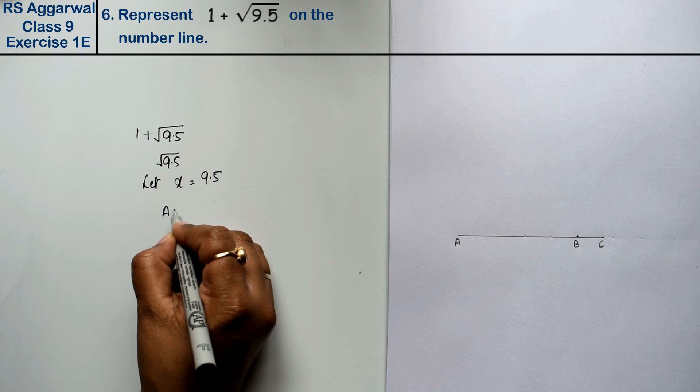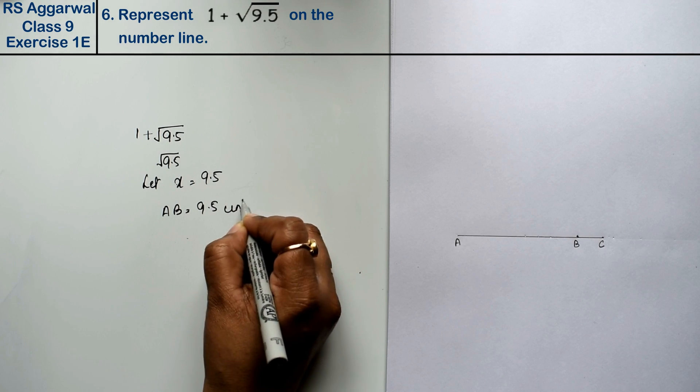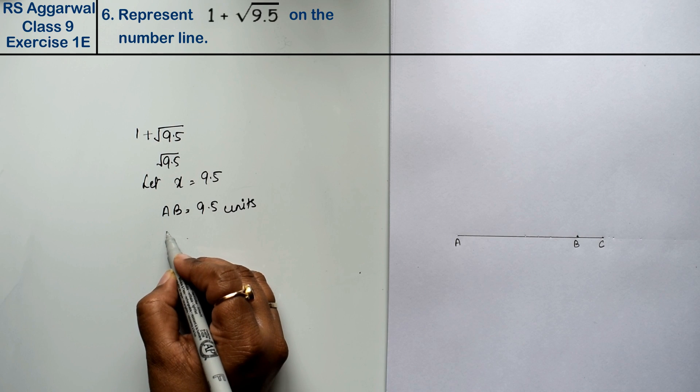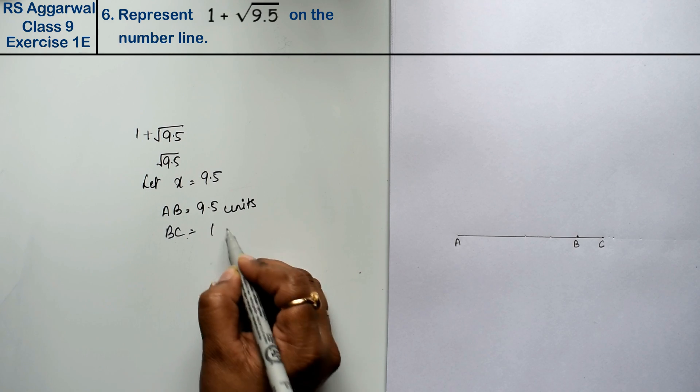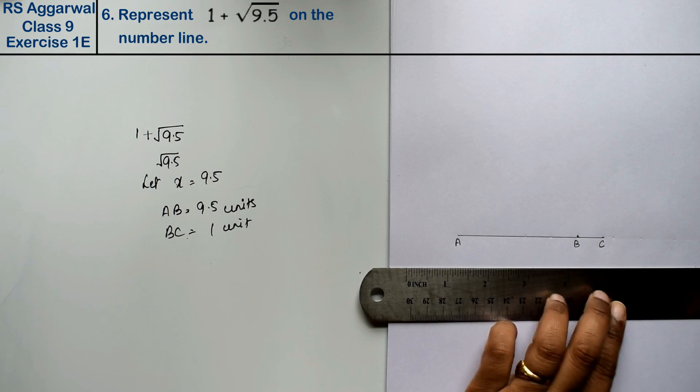Here AB is AB equals to 9.5 units, and BC is one unit. We can extend BC.